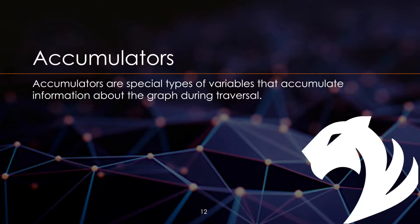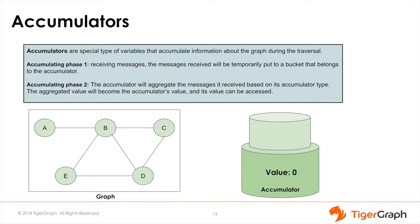Accumulators are a special type of variable that accumulate information about the graph during traversal. Like normal variables, they store values. However, what's different is the way they accumulate values. Accumulating is a behavior broken into two phases. The first phase is receiving messages — the message received will be temporarily put into a bucket that belongs to the accumulator, and the accumulator value cannot be accessed at this point. In the second phase, the accumulator will aggregate the messages it received based on the accumulator's type.